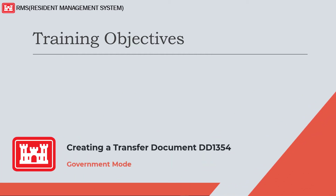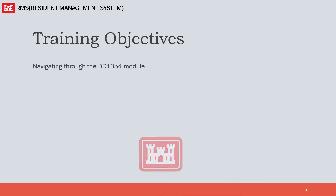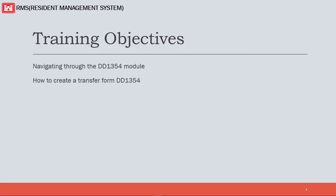Welcome. Today's topic will cover how to create a transfer document DD1354. We will cover navigating through the DD1354 module and how to create a transfer form DD1354. The transfer document can be prepared for the transfer and acceptance of DOD real property with the using agency by creating the DD1354 form. This form can only be created in government mode and relies on the real property items that have been set in the real property module.